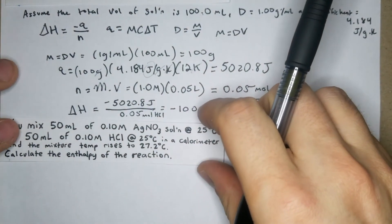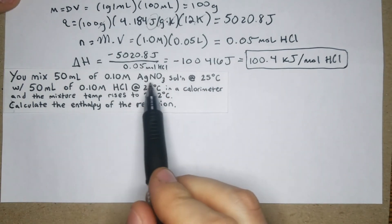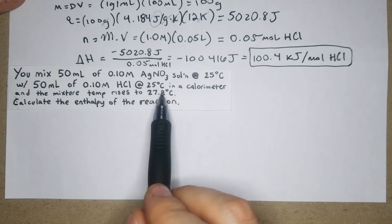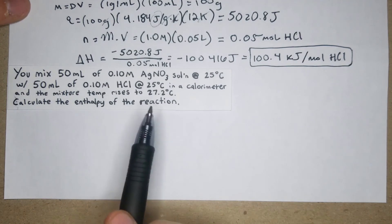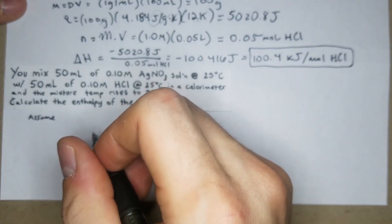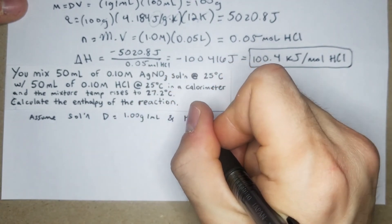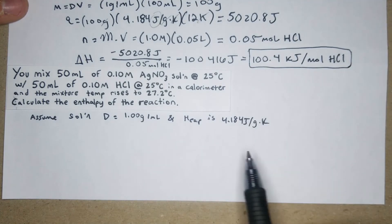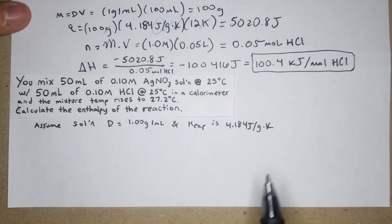Now our third and final problem. You mix 50 mL of 0.1 molar AgNO₃ at 25°C with 50 mL of 0.1 molar HCl at 25°C in a calorimeter, and the mixture temperature rises to 27.2°C. Calculate the enthalpy of the reaction. We'll assume density = 1.00 g/mL and heat capacity = 4.184 J/(g·K).